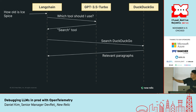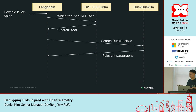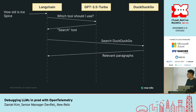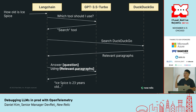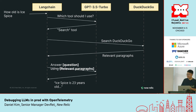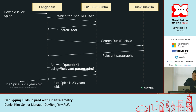Then LangChain, given this new input, searches DuckDuckGo leveraging the tool we just built and returns the relevant paragraphs — like Ice Spice is a 23-year-old rapper known for her breakout singles. And then given this additional context, LangChain calls the GPT-3.5 API with: answer the question — how old is Ice Spice — using the returned context from DuckDuckGo. And then it returns the right answer: Ice Spice is 23 years old. That's how we get to the final answer.